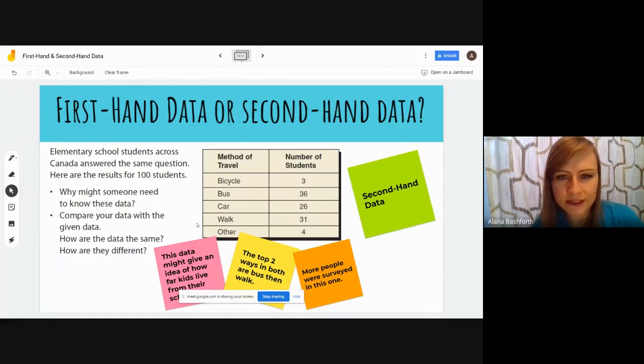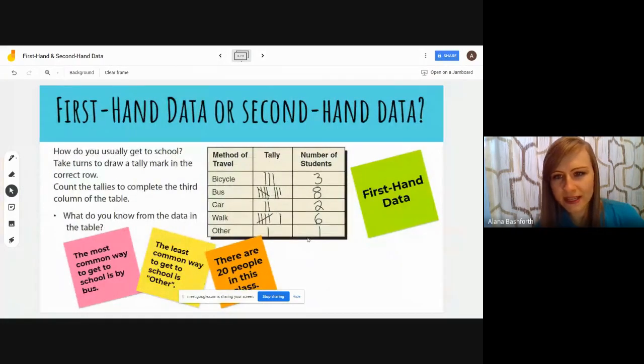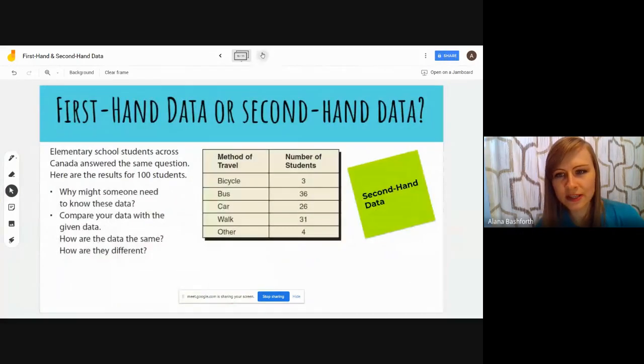These are some of the answers. Why might someone need to know these data? Well, maybe this data might give an idea of how far away kids live, because if they're taking the bus or a car they probably don't live within walk or biking distance. There are other reasons but that was one example. To compare: how are the data the same? The top two ways in both of them are bus and then walk. In the one that I made up, which I didn't actually pay attention to this when I made it, so it's funny that it's that. Walk was the second top one just like in the last one. I can go to that one, it's right here. See, bus and walk are top ones just like in this one.